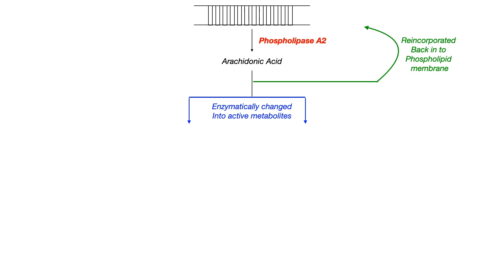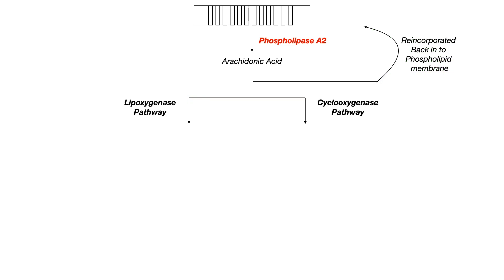For the purposes of USMLE and COMLEX, you essentially want to understand that arachidonic acid can be enzymatically changed into downstream bioactive metabolites through one of two pathways. The pathway shown on the left is the lipoxygenase pathway, or LOX. The pathway shown on the right is the cyclooxygenase pathway, or COX. So arachidonic acid can either be recycled or it can go through LOX or COX.